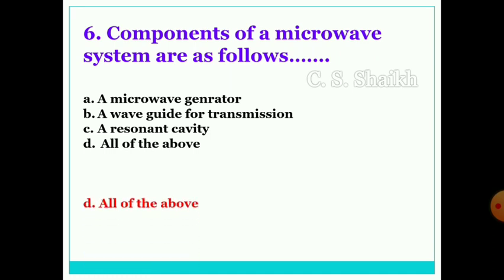Sixth question is: components of microwave system are as follows. What components are included is the question. So all of the above: microwave generator, waveguide for transmission, a resonant cavity, all are included. So the option will be the correct one.